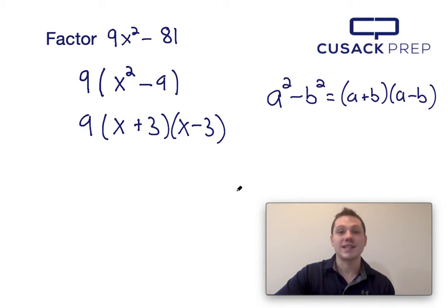And there you have it, that's how you factor 9x squared minus 81 via the difference of squares equation. Thank you for watching.